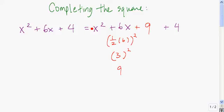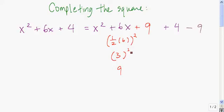You're going to see that these are not equal — x squared plus 6x plus 4 does not equal x squared plus 6x plus 9 plus 4. So we have to compensate for adding the plus 9 by next subtracting that same exact number. To recap: we put the plus 4 on the side, took half of this number, squared it, added that result, then subtracted that result.